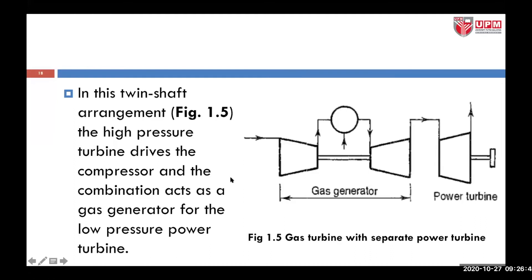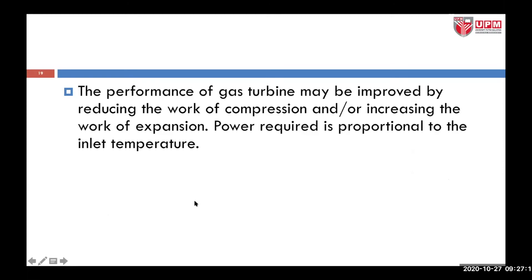In this twin shaft arrangement, figure 1.5, the gas turbine has a separate power turbine. We have a case where the compressor is connected via a single shaft to the turbine — this is what we call the gas generator — and it is coupled with a power turbine, another turbine set separately. This combination acts as a gas generator for the low-pressure power turbine.